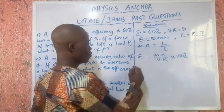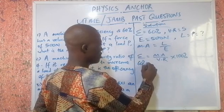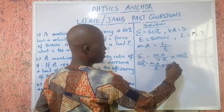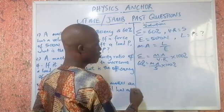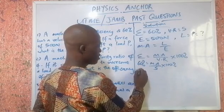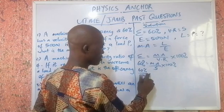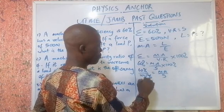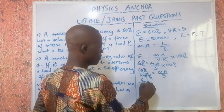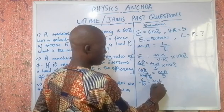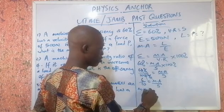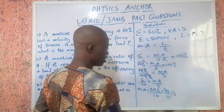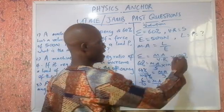Using the efficiency formula: 60% equals mechanical advantage over velocity ratio 5, times 100%. Dividing both sides by 100% gives us 60/100 equals MA over 5, which simplifies to 6/10 equals MA over 5. So MA equals 5 times 6 divided by 10, which is 30 divided by 10, giving us MA equals 3.